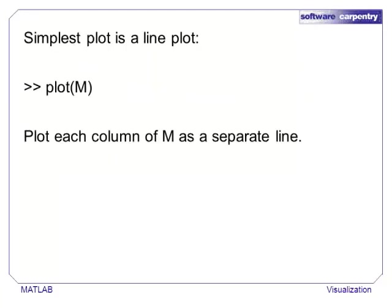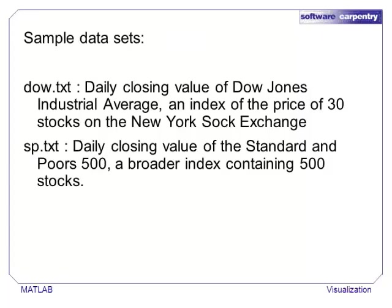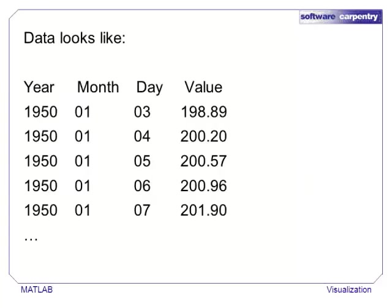MATLAB contains several plotting functions that are highly customizable. The simplest plot function is the function plot, which will create a line graph with one data set for each column of M. In this example, we will use two data sets that contain historical financial data for the Dow Jones Industrial Average and the Standard & Poor's 500. Both files contain four columns. The first three form a date and the fourth value is the closing value of one of the two indices on that day.